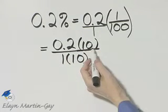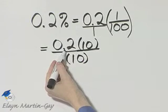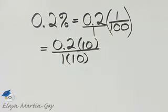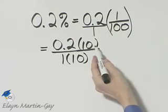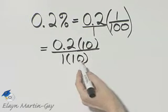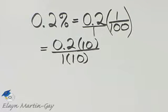Now why? Because multiplying by ten has the effect of moving this decimal point one place to the right, so I'll no longer have a decimal number in this numerator. And as long as I do the same thing in the numerator and the denominator, I have an equivalent fraction.